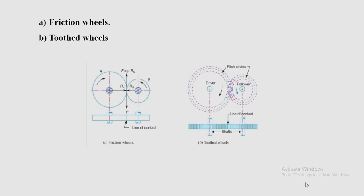Teeth are provided on the periphery of wheel A, which fit into the corresponding recesses on the periphery of wheel B. These projections on wheel A fit into the recesses of wheel B, and the engagement of teeth transmits motion from one shaft to another.